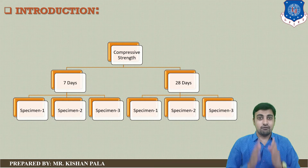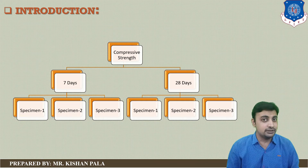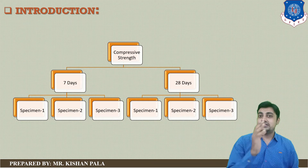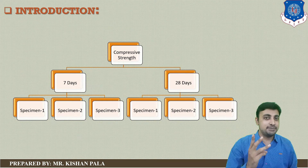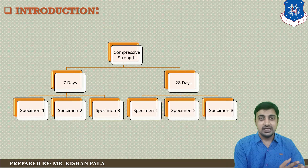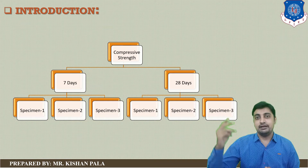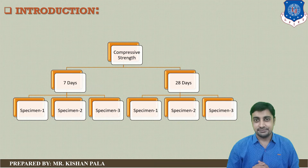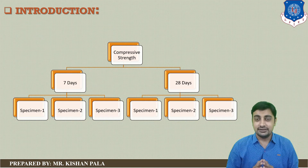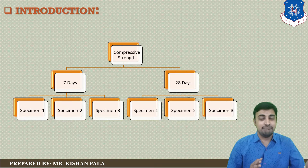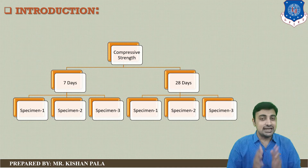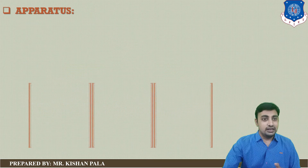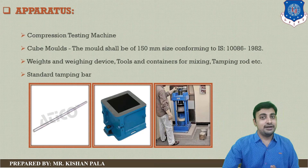Let us discuss the number of specimens required for finding the hardened properties of the concrete mass. For finding the strength of the concrete mass, you have to identify the 7-day strength and 28-day strength. You require 3 specimens for the 7 days and 3 specimens for the 28 days — that is, 3 plus 3 equals 6 cubes total for finding the compressive strength of the concrete mass.